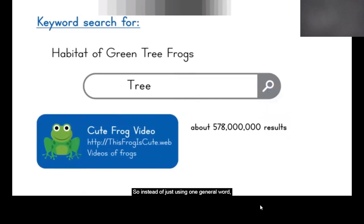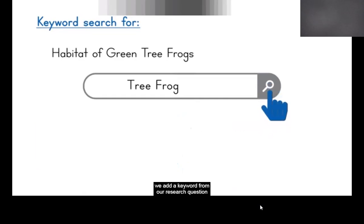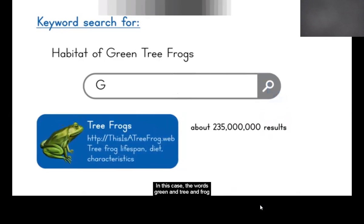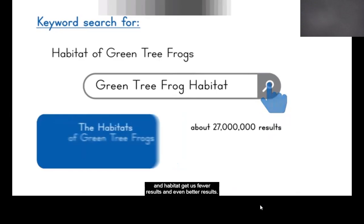So instead of just using one general word, we add a keyword from our research question and see how that gets us better results and fewer results. In this case, the words green and tree and frog and habitat get us fewer results and even better results.